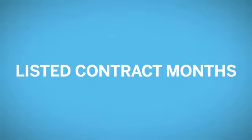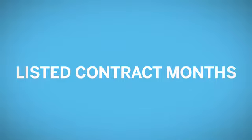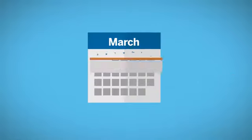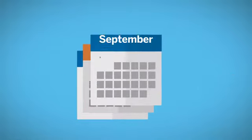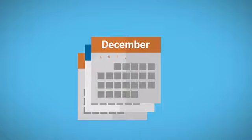Listed Contract Months: For all the Treasury contracts, CME Group lists three consecutive quarterly expiration months following the March, June, September, December cycle.